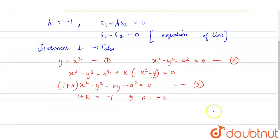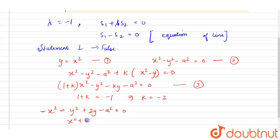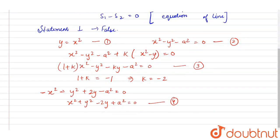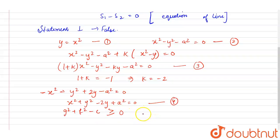Substituting k equals minus 2 into equation 3, we get x squared minus x squared minus y squared plus 2y minus a squared equals 0. Taking minus common, this gives x squared plus y squared minus 2y plus a squared equals 0 — call this equation 4. For equation 4 to be a real circle, we need g squared plus f squared minus c must be greater than or equal to 0, since the radius squared must be greater than or equal to 0.